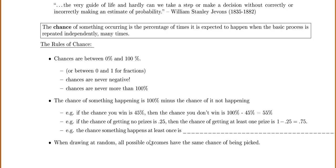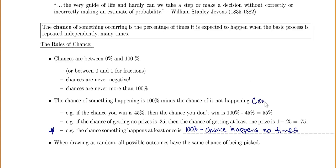This next rule is one that we're going to use all the time because it's very useful. The chance of something happening at least once is 100% minus the chance that it happens no times. The reason is those two things are opposites — happening at least once is the opposite of happening no times — and whenever you have opposites their chances have to add up to 100%. This is called the complement rule.